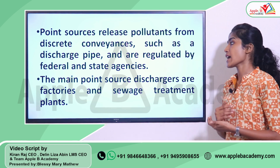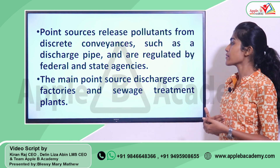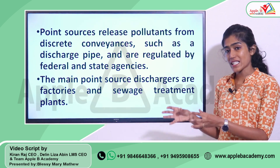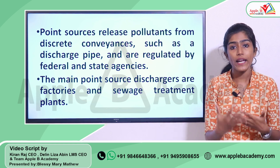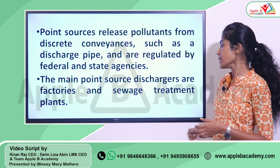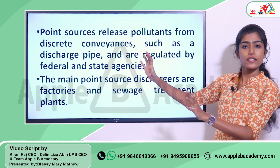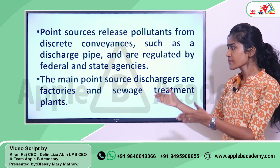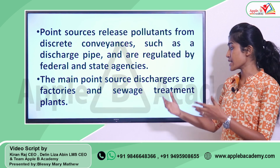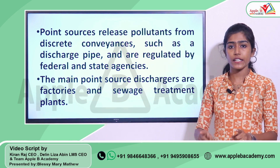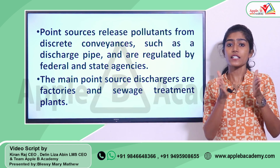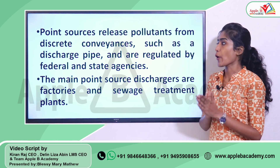Point sources such as a discharge pipe are regulated by federal and state agencies. If you consider these point sources as specific identifiable sources, examples include factories and sewage treatment plants. These are definite identifiable sources — we can see certain discharges coming out of discharge pipes located in factories and sewage treatment plants. We can identify that a particular pollutant is released from a particular source.